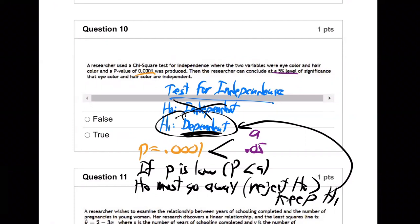What did it say? Independent. No, no, no, that's false, right? If the p is low, H0 must go away. Reject H0, keep H1 dependent. They said independent. False. There we go. That's false, right?